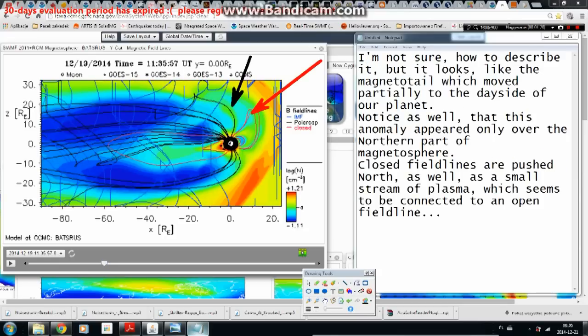I'm not sure how to describe it, but it looks like the magnetotail which moved partially to the day side of our planet. Notice as well that this anomaly appeared only over the northern part of magnetosphere. Closed field lines are pushed north as well as a small stream of plasma which seems to be connected to an open field line.